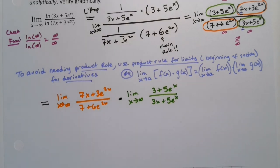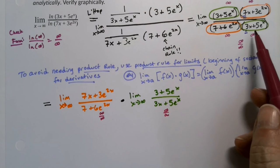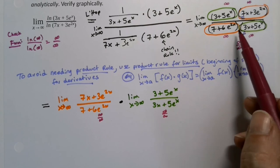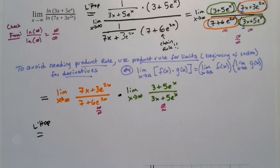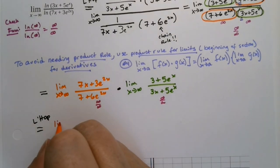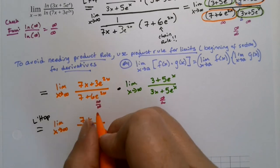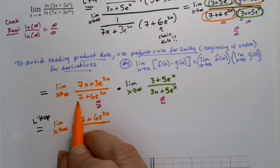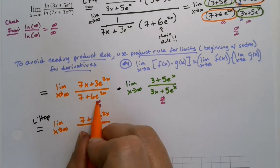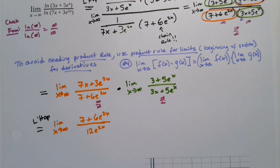These are all still infinity over infinity, since that's what they were before — I just broke them into two pieces. Since both are infinity over infinity, I can apply L'Hôpital's rule to each. The first limit becomes: the limit as x goes to infinity of (7 + 6e^(2x)) — using chain rule again — over (0 + 6e^(2x) · 2), which is 12e^(2x).